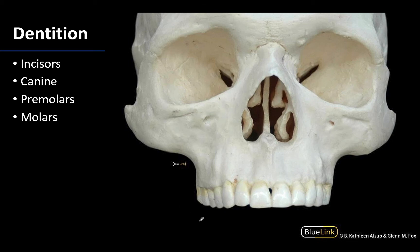In terms of incisors, you are going to have a central incisor on both sides as well as a lateral incisor, and these are often referred to as kind of shovel-shaped. They do not have multiple cusps associated with them and they are fairly nondescript in terms of their shape. As you can see here, the central incisors when we're talking about the maxillary teeth are going to be larger than the lateral incisors.